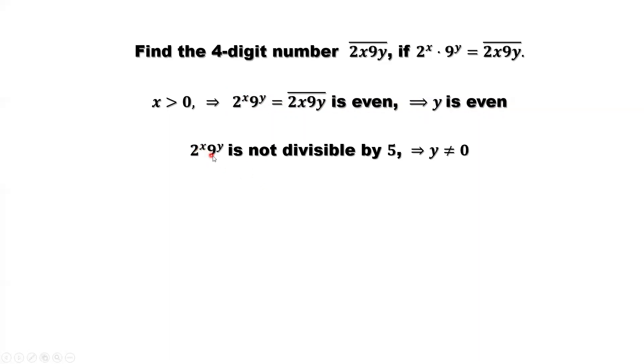2 to the power x times 9 to the power y is not divisible by 5. Because from the left hand side, we don't have any 5 as a factor. This implies the right hand side, the last digit, y cannot be 0. If it is 0, it is divisible by 5. y is not 0, it is bigger than 0.